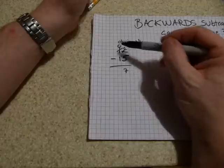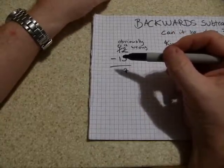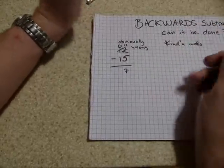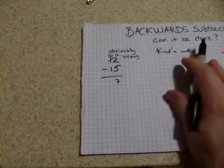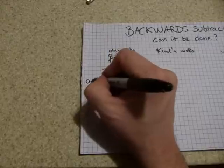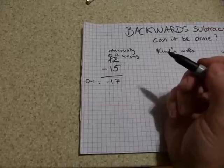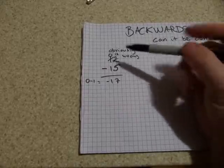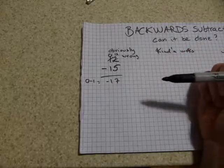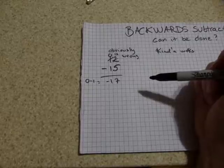Then we have 0 minus 1 in the tens column. We cannot take away 1 from 0, but if we just follow the steps for standard subtraction, we might write down minus 1. That gives us a result of 12 take away 15 equals minus 17 — which is obviously wrong, because the correct answer is minus 3.